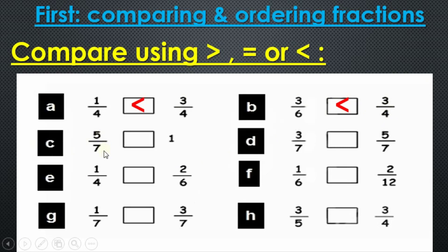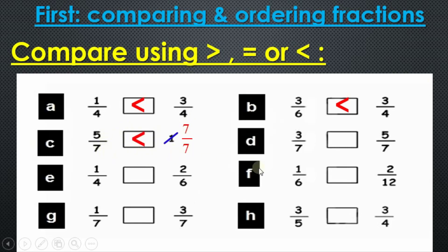Question number c: five sevenths or whole one. The whole one is like clay — we can shape it however we want. We shape it according to the denominator in the problem. The denominator here is seven, so the whole one becomes seven over seven. Comparing: five sevenths or seven sevenths? The denominators are equal, so the bigger numerator wins — seven beats five. So the whole one is bigger than five sevenths.